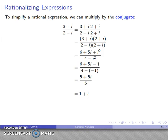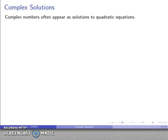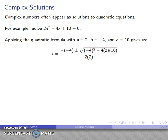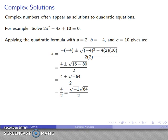Why would we ever want to deal with square roots of negative numbers? This goes back to the quadratic formula — the very first time mathematicians ran into complex numbers was solving a quadratic equation. For 2x squared minus 4x plus 10, with a equals 2, b equals negative 4, c equals 10, substituting into the quadratic formula yields the square root of a negative number. Previously this meant no real solutions; now we have imaginary solutions. Square root of negative 64 factors as i times 8, giving x equals 2 plus or minus 4i as the two solutions.